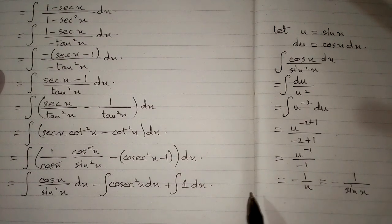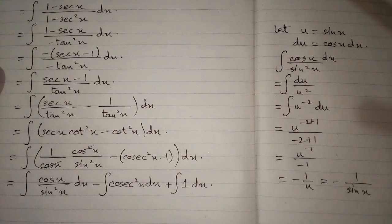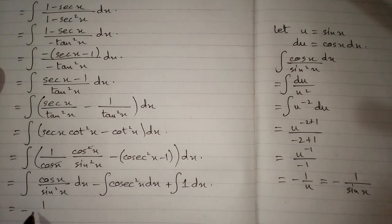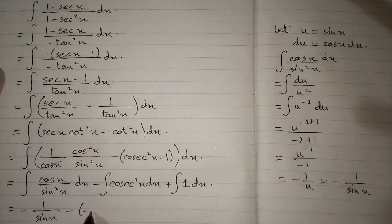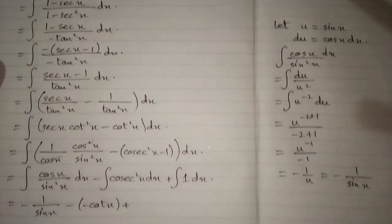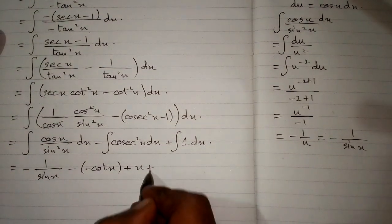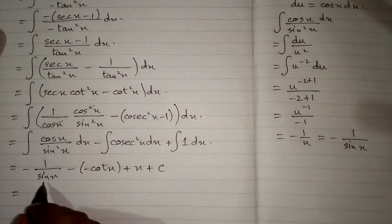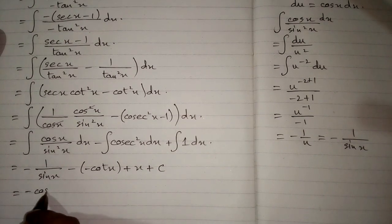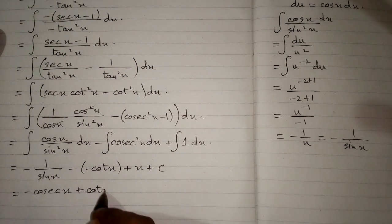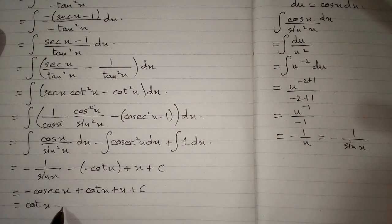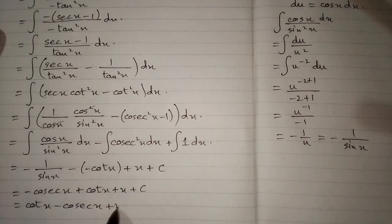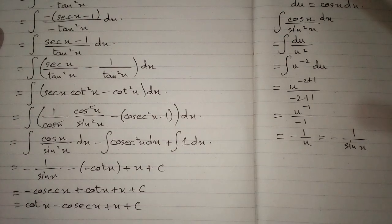So the integral of cos x upon sin squared x is minus 1 upon sin x, which is minus csc x. The integral of cot squared x gives minus cot x, and minus minus gives plus cot x. The integral of 1 is x. Putting it all together: minus csc x plus cot x plus x plus C, which can be written as cot x minus csc x plus x plus C, and this is the required answer.